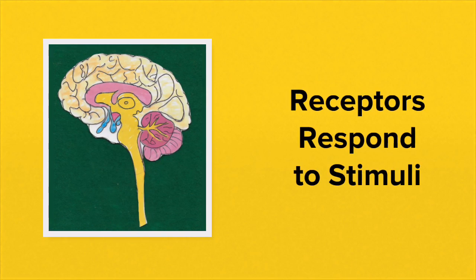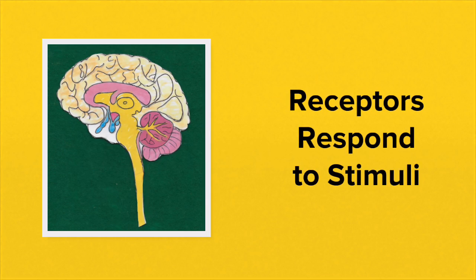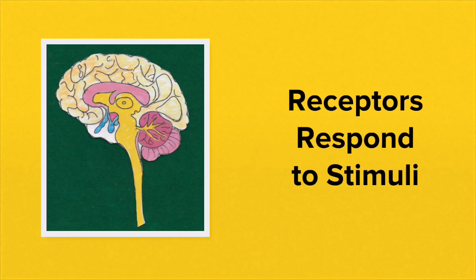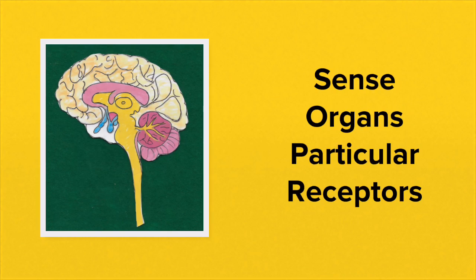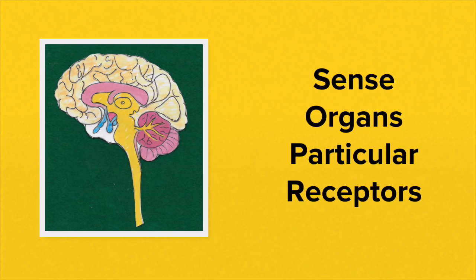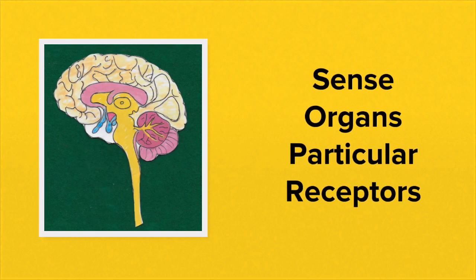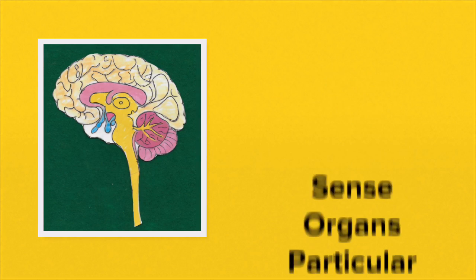Our ability to perceive these senses is all down to specialised receptors which respond to changes in our surroundings. Each sense organ has particular types of receptors which respond to particular changes, to particular stimuli.